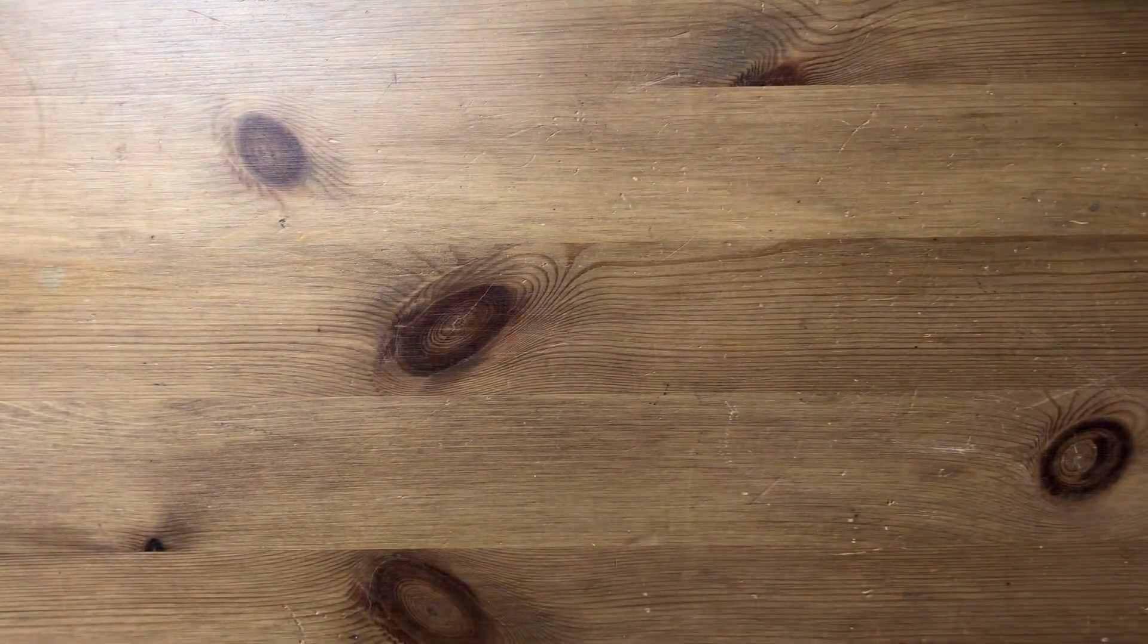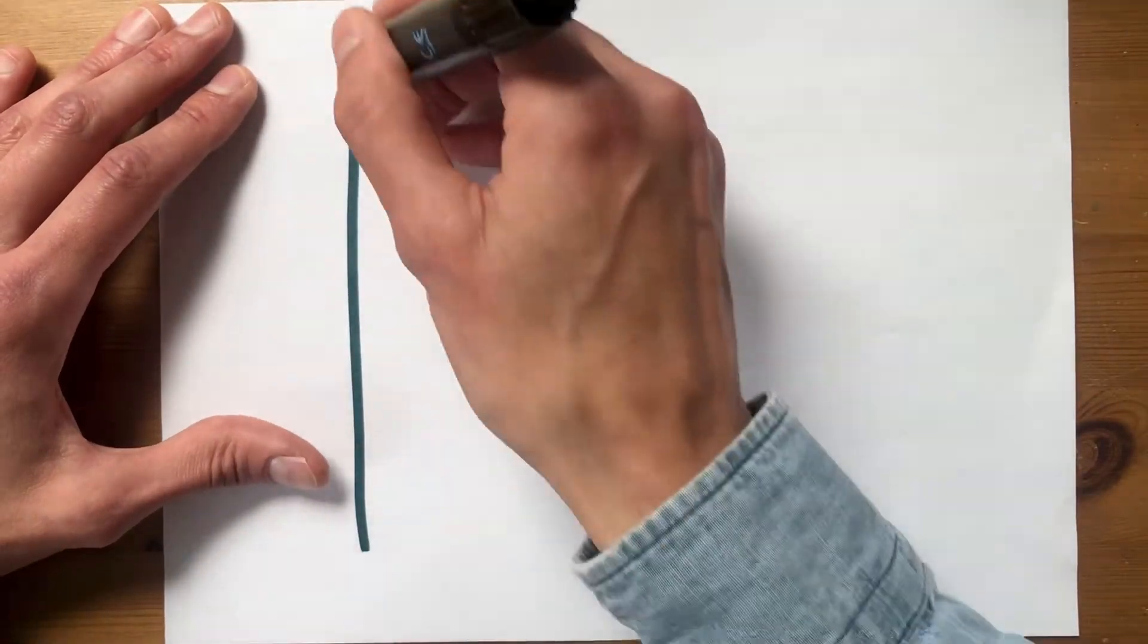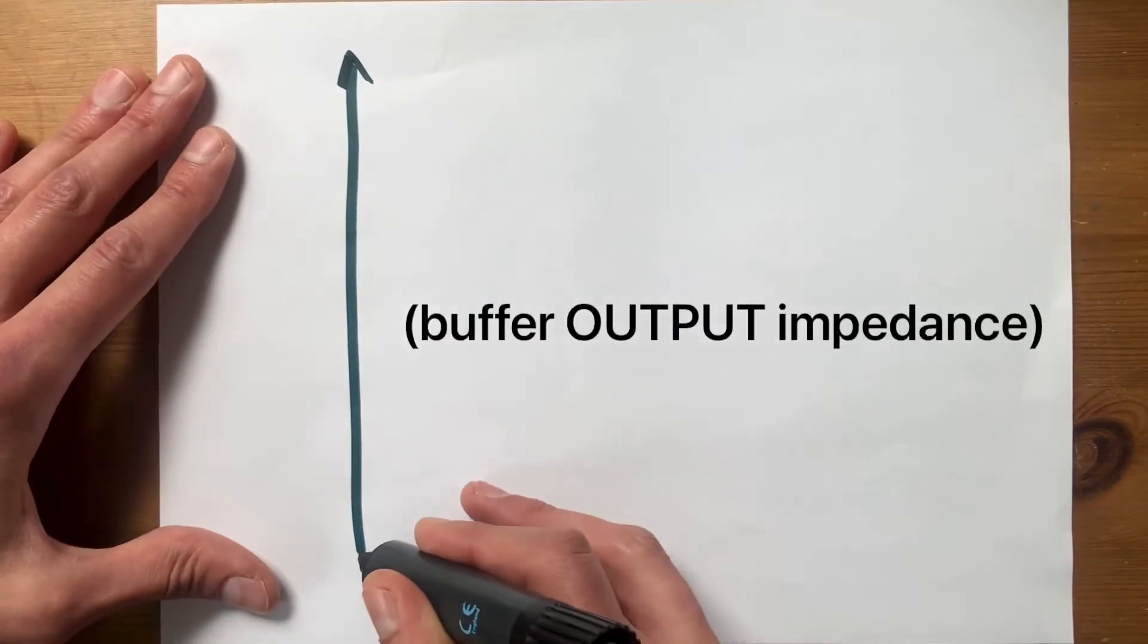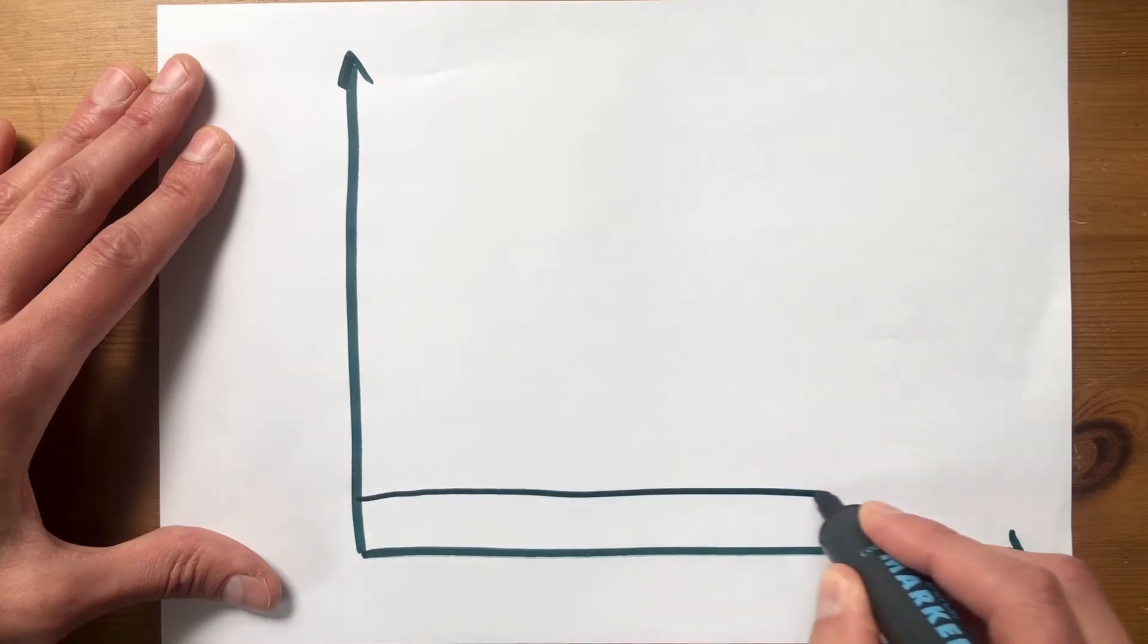This is where we meet our first issue with the buffer. Let's redraw our buffer impedance. It's fixed and it's low.